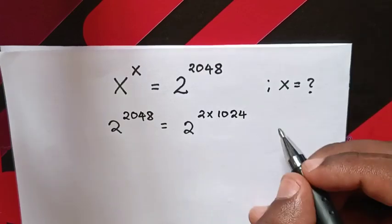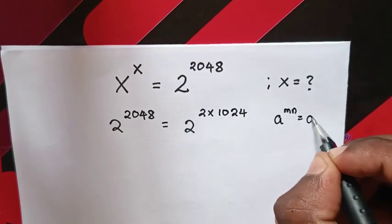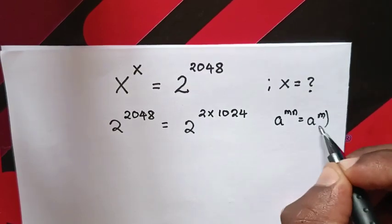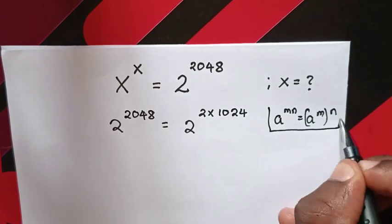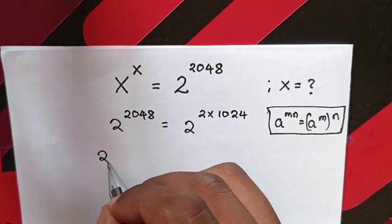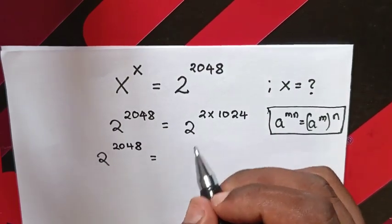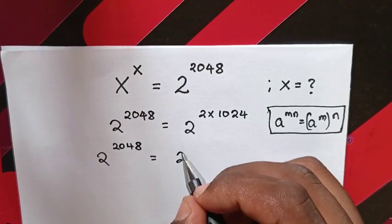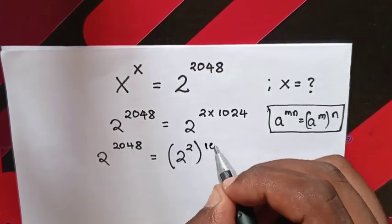From here, we apply the exponential rule that a^(mn) = (a^m)^n. So this 2^2048 will equal (2^2)^1024.